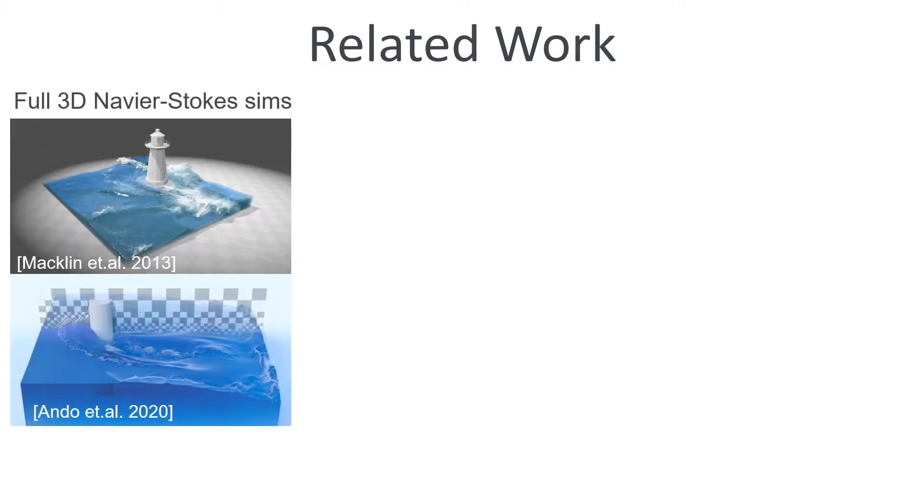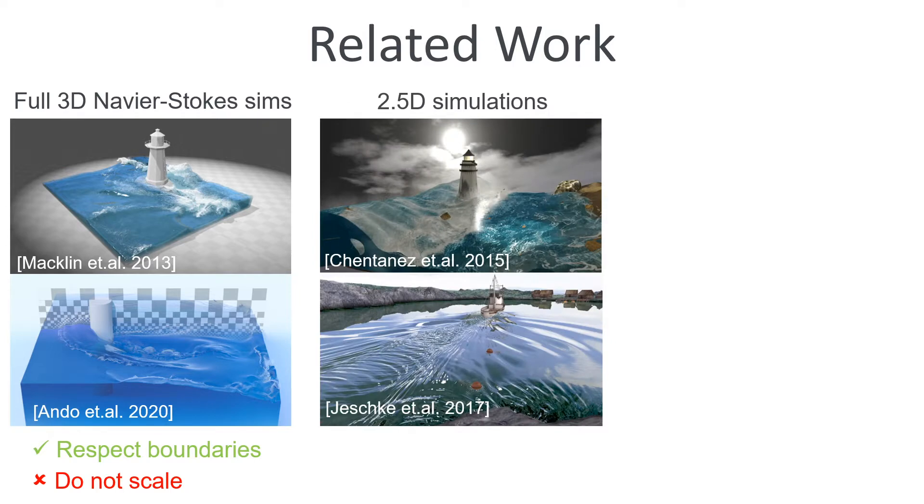Looking at the state of the art in water simulation, the first class of methods solves the full Navier-Stokes equations. We show only two representatives from the huge number of existing work. We note that these methods respect boundaries, but they generally do not scale well to larger scenes. To improve the scaling, numerous 2.5D simulations have been proposed. These methods still mostly respect boundaries and scale better, but still much worse than the third class of methods, namely procedural animations.